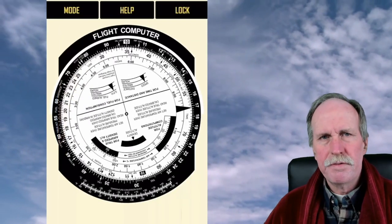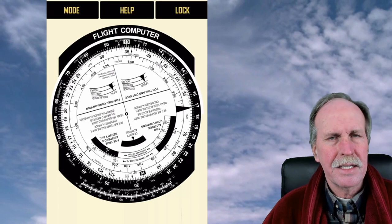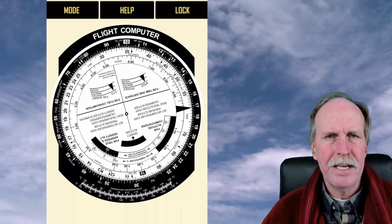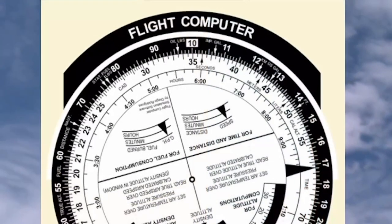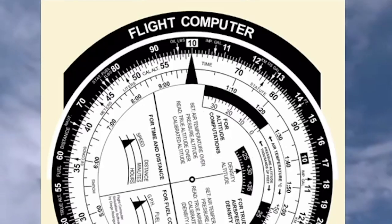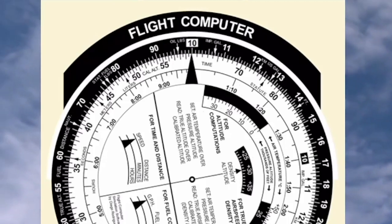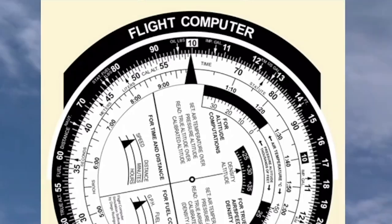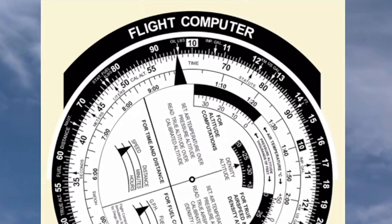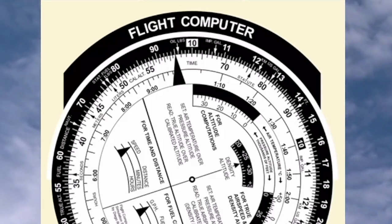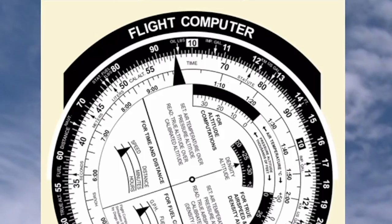So that's the slide rule function of the E6B — that does multiplication and division. Now we're going to do some of the specific aviation functions. That black triangle there is called the rate index. Just to the left of it is 55, and just to the right is 70. 60 minutes, of course, is one hour, and that's very useful to us. As an example, let's look at my fuel burn rate, which is 9.5 gallons per hour. So in 60 minutes, I'll burn 9.5 gallons of fuel.